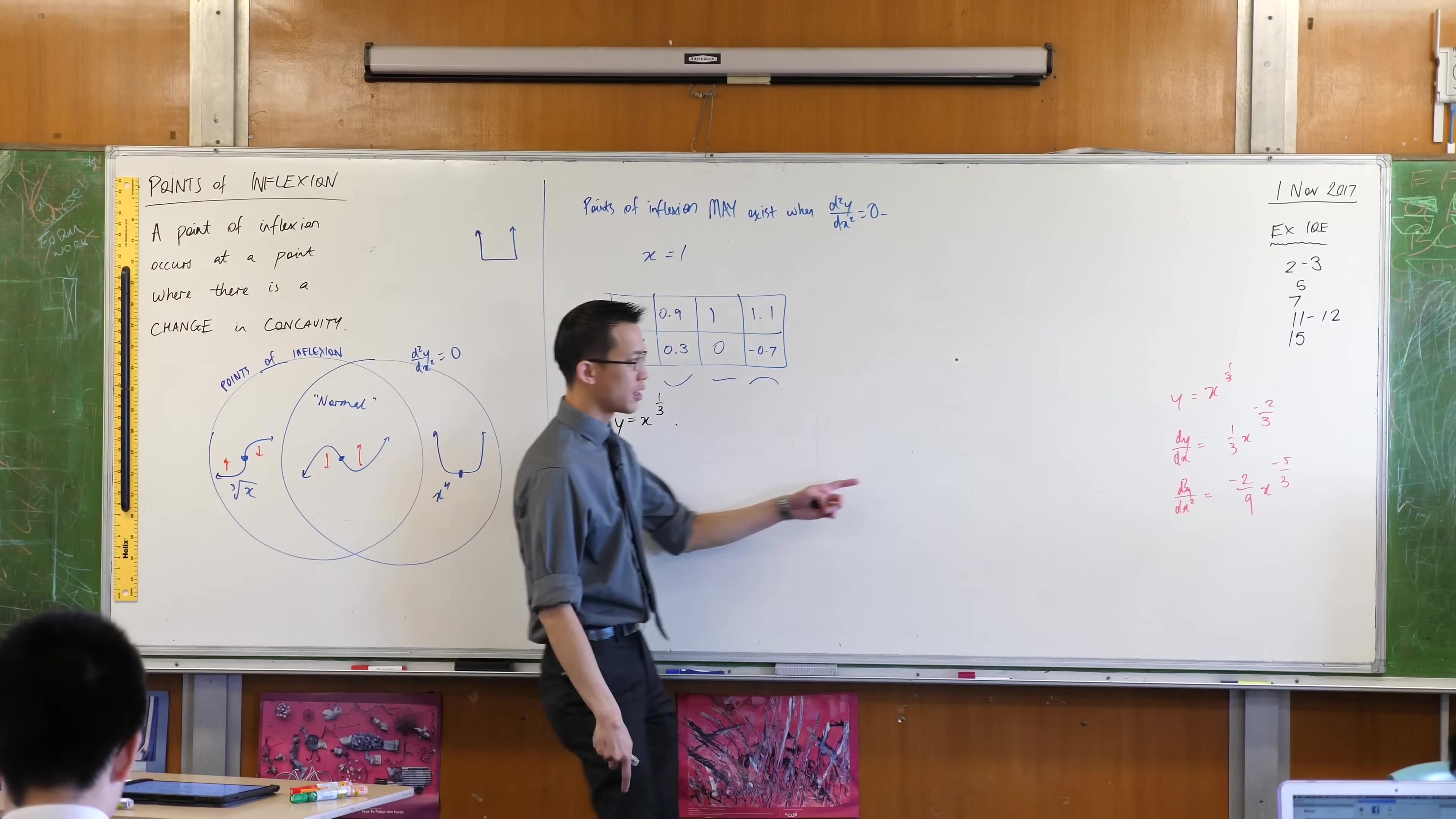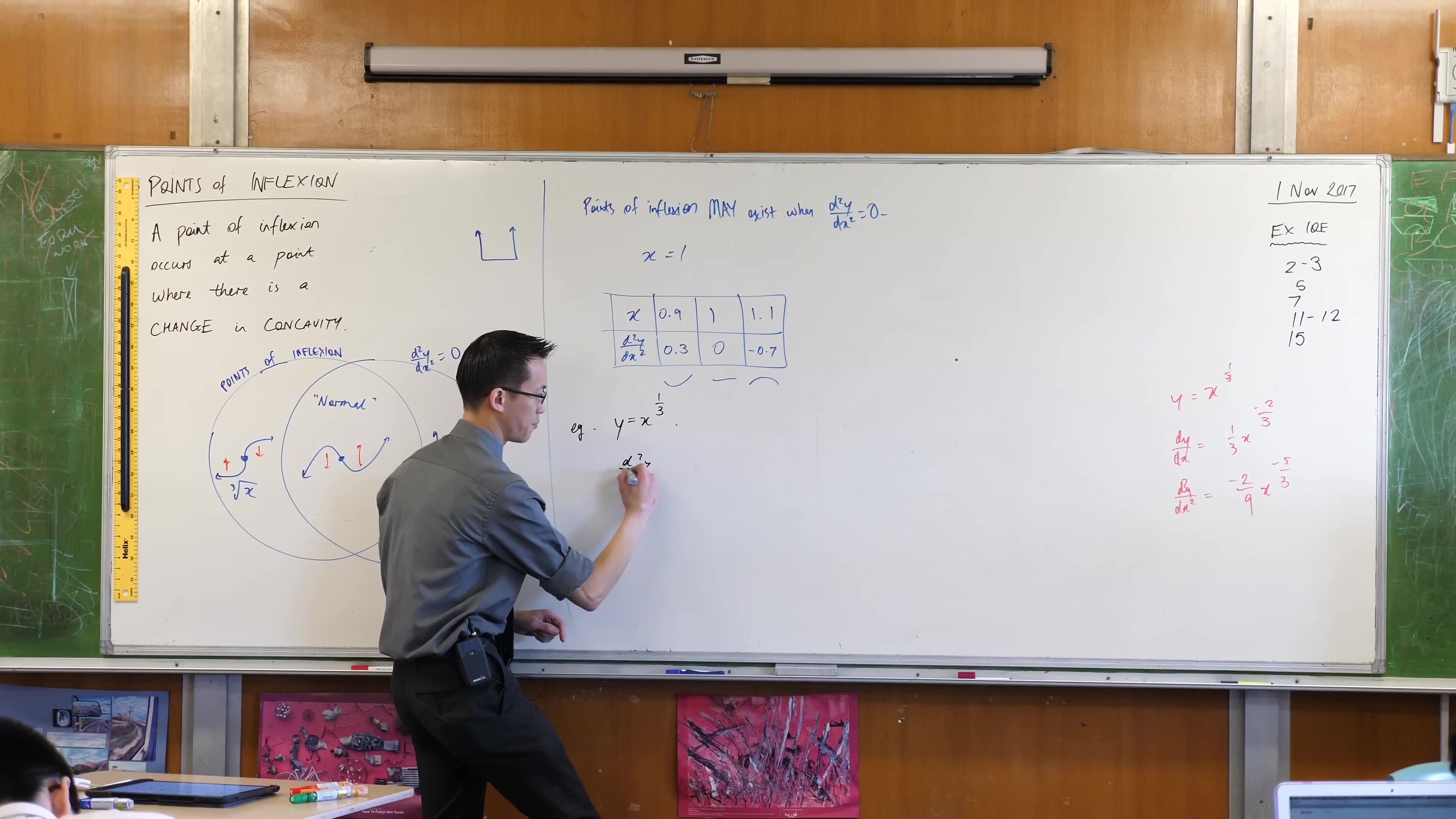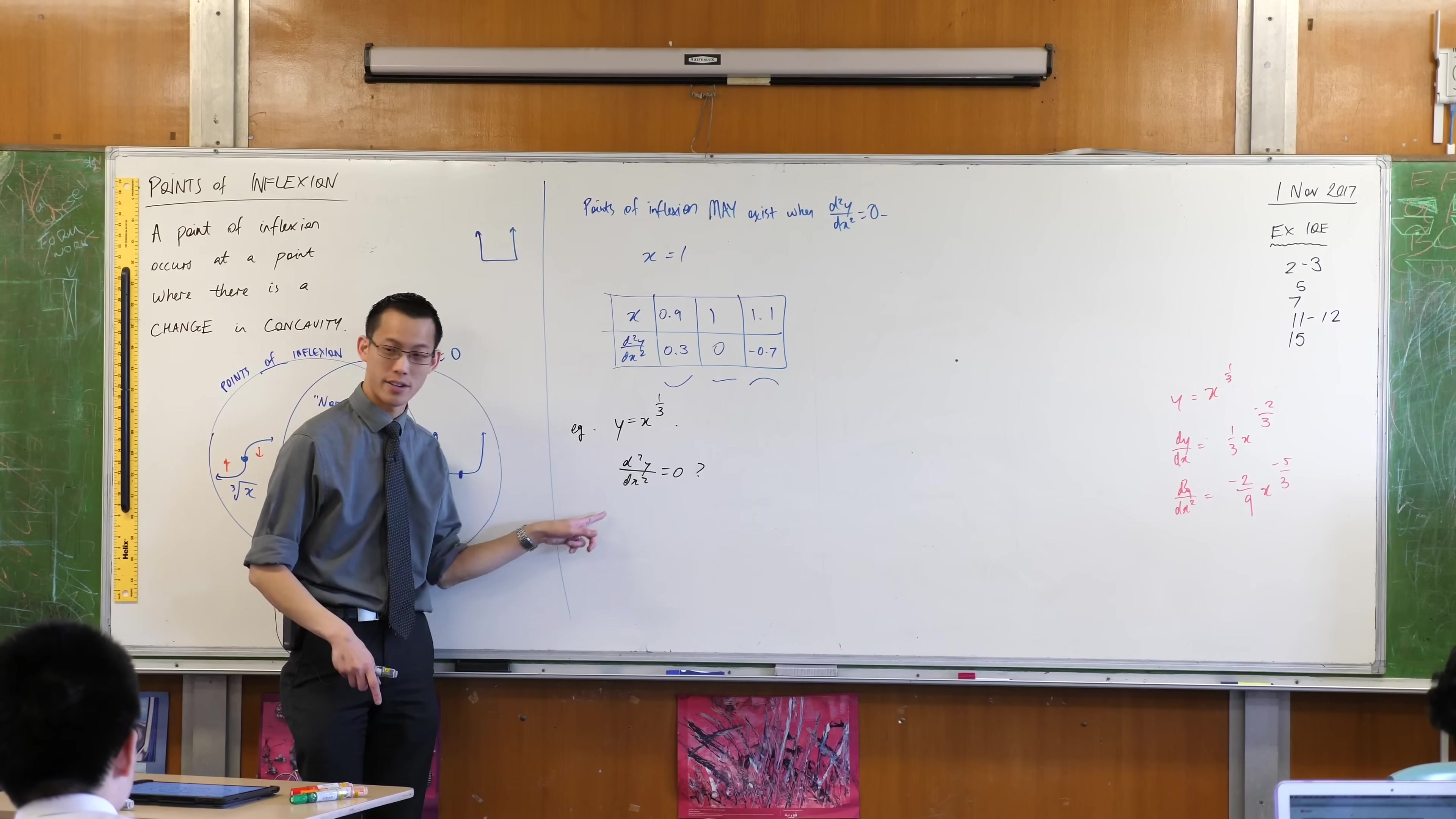Just like usual, you would differentiate once, you'd differentiate again. And what you're doing is you're searching for where points of inflection may occur. So the first thing is, the first question you ask is, is there any place where the second derivative is zero? You don't get any values. The second derivative is never equal to zero for this particular curve.